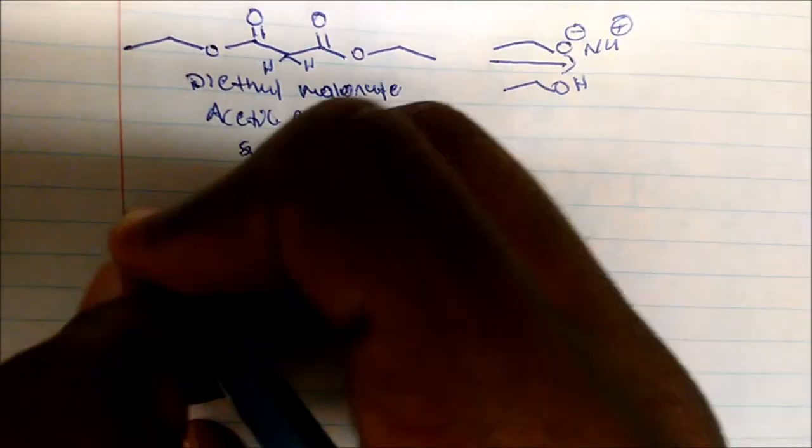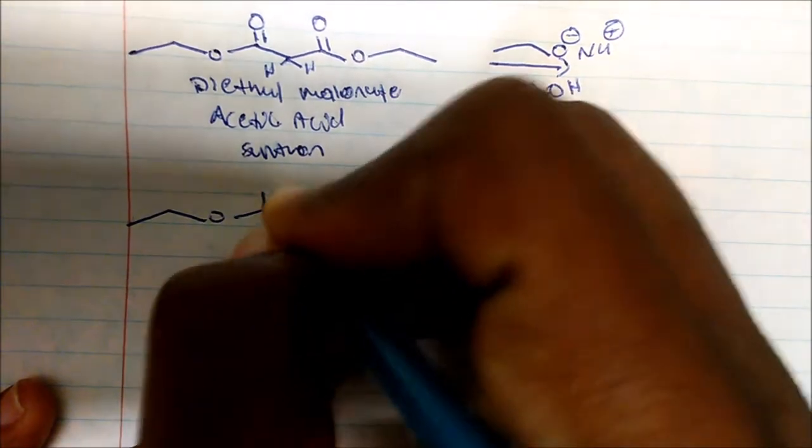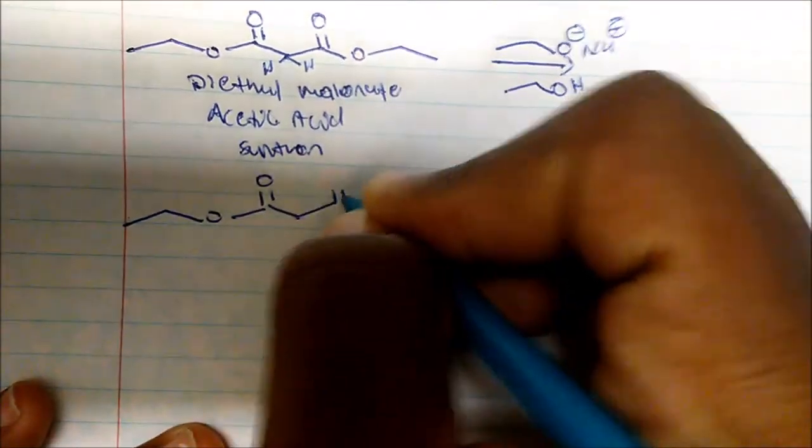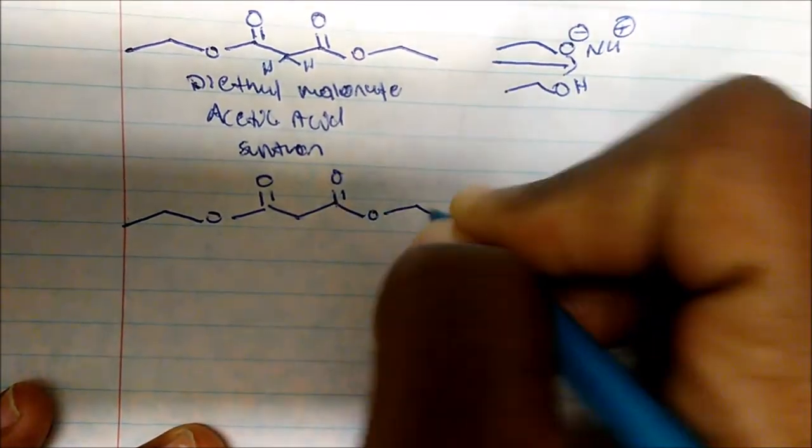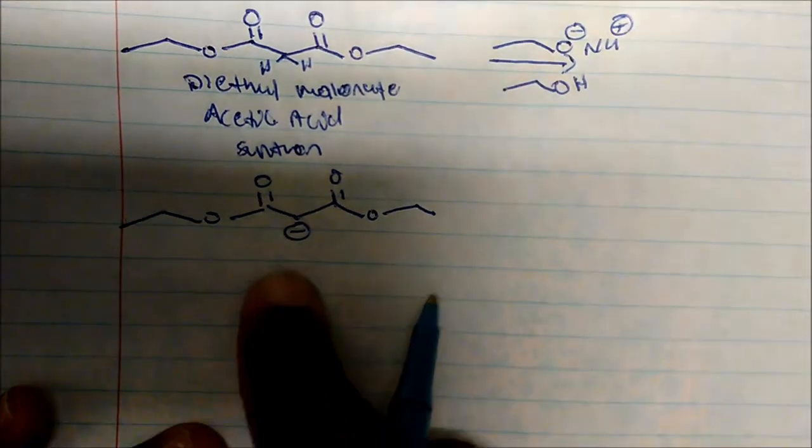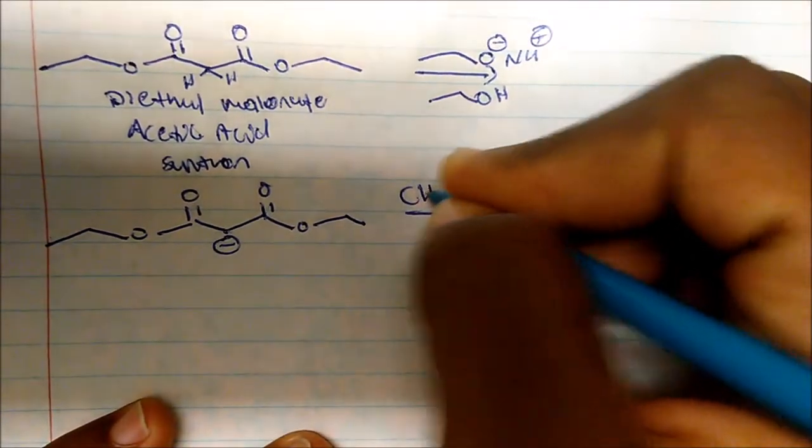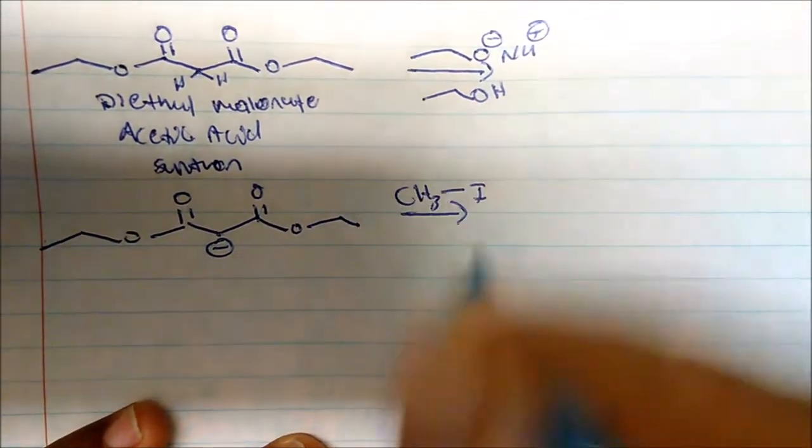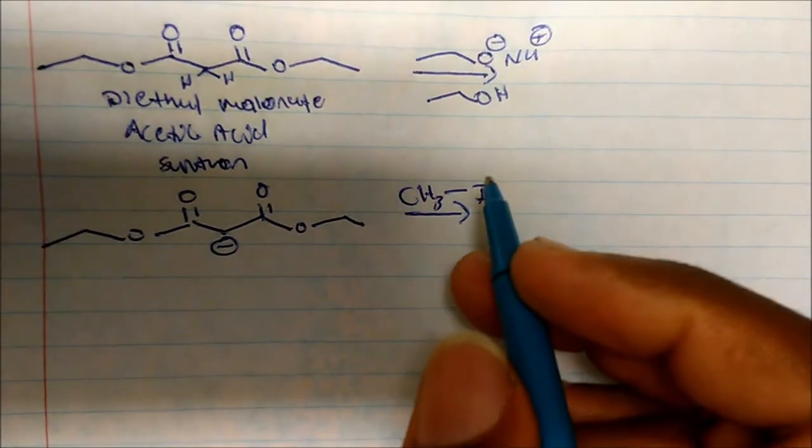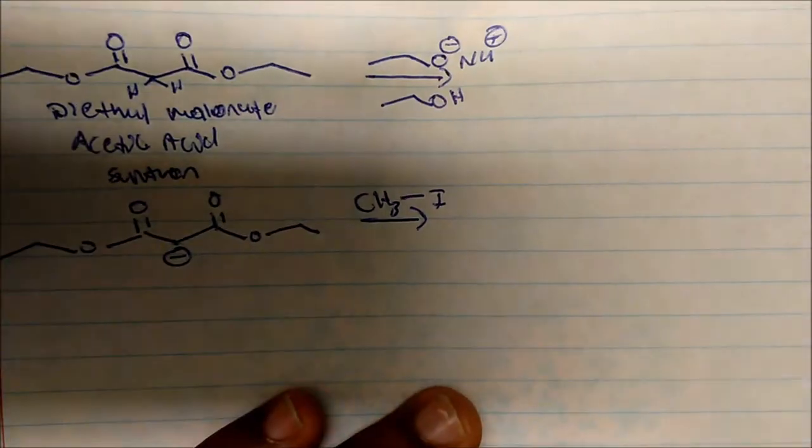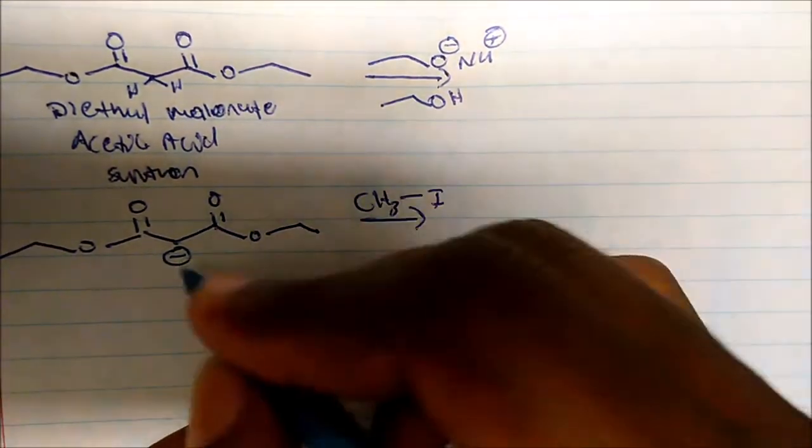And once I treat that with base, I'm going to take one of those hydrogens off. I'm going to generate a negative charge on the middle carbon, which is my alpha carbon. And the idea is I could treat this with some sort of SN2 target. So in this case, I'm going to use methyl iodide. And when I use methyl iodide, here's what I form.